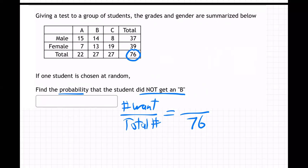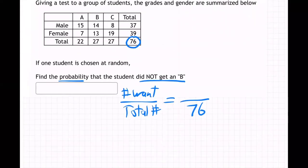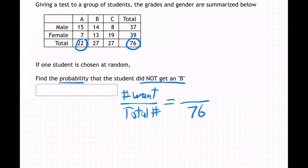Well, how many people did not get a B? Well, all the people who got an A—circling is off—there we go, and all the people who got a C. So 22 plus 27, which comes up to be, what's that, 49 over 76.